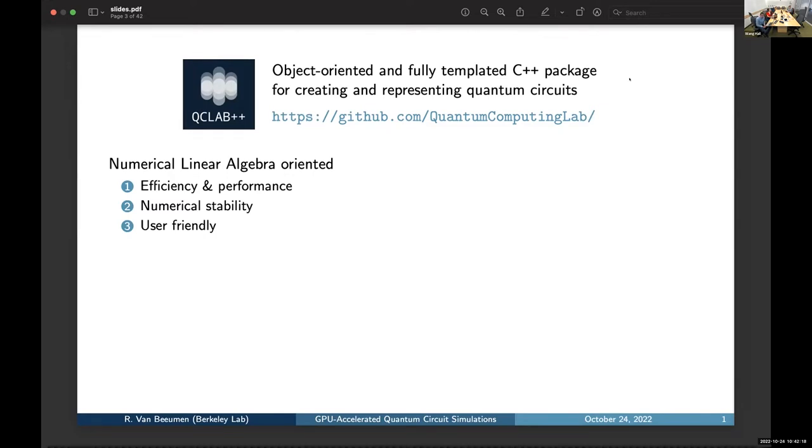These are the following three key features of QCLab++. First is efficiency and performance. Second is numerical stability. For example, for a rotation gate, we don't store the angle of the gate, but we store the cosine and the sine of the angle, such that we can do some numerically stable operations with it, and we try to make it as user-friendly as possible with a goal to allow for rapid prototyping and testing of quantum algorithms in C++.